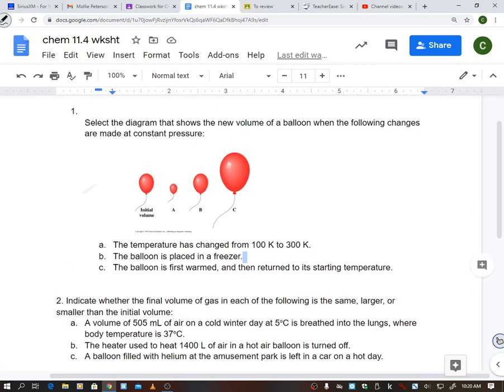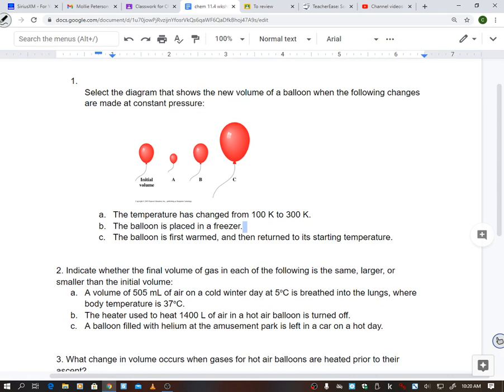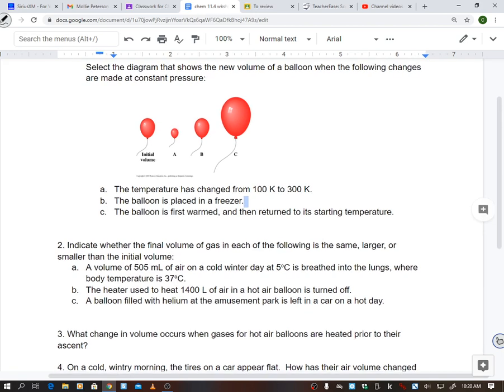So knowing that, we're going to answer number 1 here, and it says select the diagram that shows the new volume of the balloon. So A, if the temperature has changed from 100 to 300 Kelvin, it has increased. So my volume is going to increase to balloon C. On B, the balloon is placed in a freezer. Well, your temperature is lowering, it's getting colder, so your volume is also going to lower. And then on C, the balloon is first warmed and then returned to its starting temperature. So if it's at its starting temperature, it's going to be the same as what you have right now, so B. So the answer should be CAB.